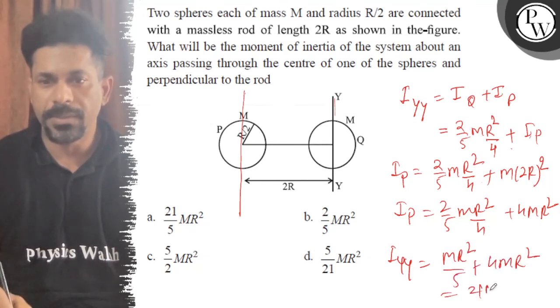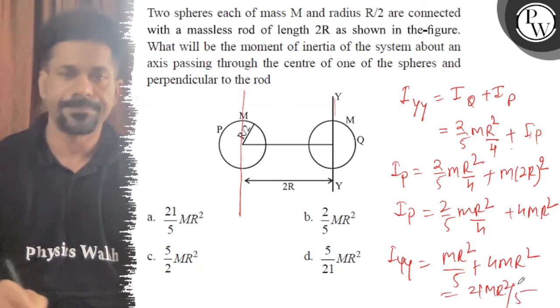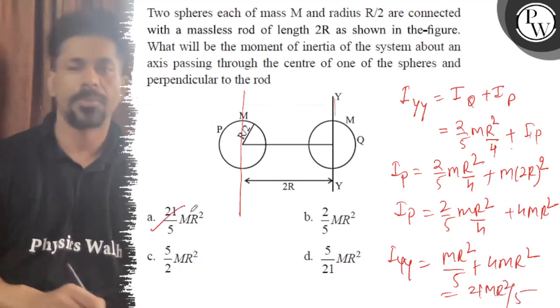That means 21MR²/5. This is the correct answer. Option A is correct. All the best!